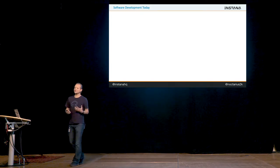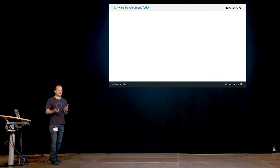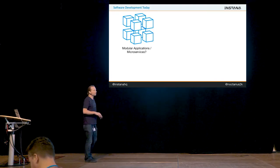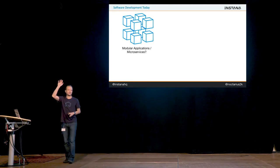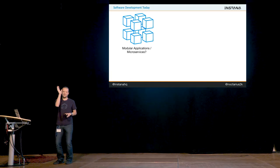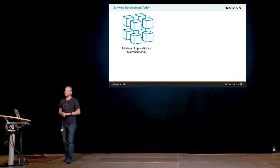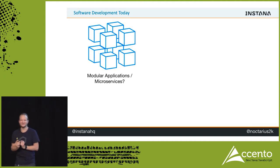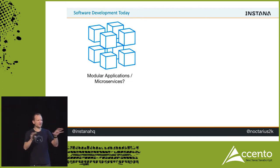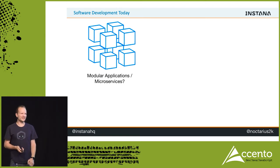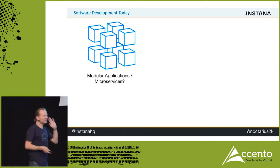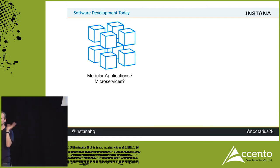First, we need to figure out what this actually means. We're talking about modular applications, most of the time built out of microservices. Who does microservices here? Do we need to define 'micro' - like function-as-a-service micro? Most of you are still working on large monolithic systems. You can have multiple monoliths working together and it's still micro - it just depends on how you define it.